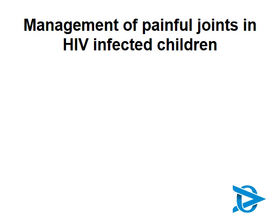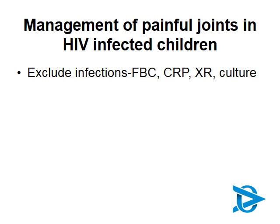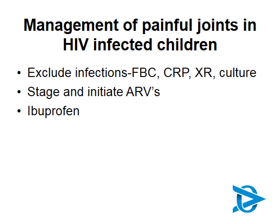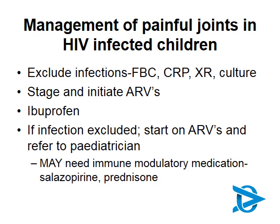How do we manage painful joints in HIV-infected children? First, exclude infections — examine the child well, do full blood count and CRP, you may need to do an X-ray, and if you can get fluid from the joint, culture it and look for TB. It's very important to stage the child and initiate ARVs, then provide analgesia using ibuprofen. If infection has been excluded and you're concerned about reactive or juvenile arthritis, start ARVs and refer to a pediatrician. Sometimes immune-modulatory medications such as sulfasalazine or prednisone are needed.